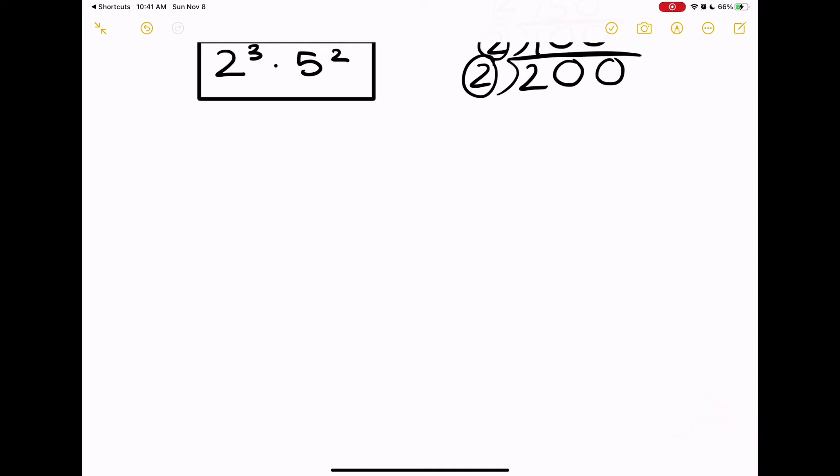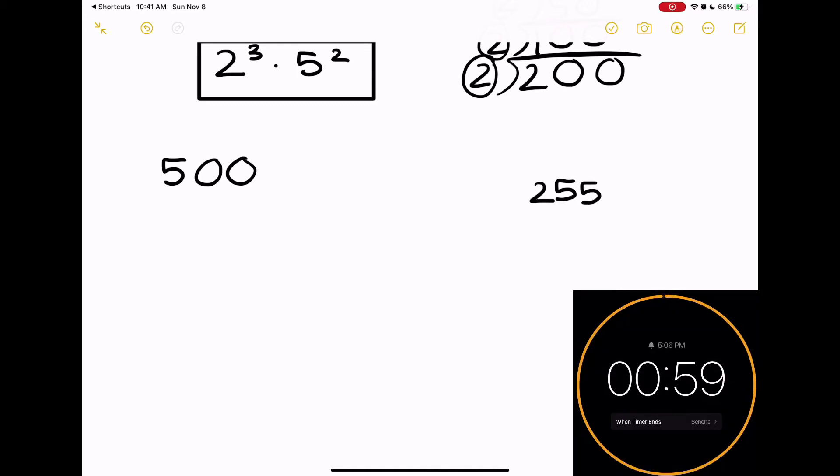If you're unsure if you got the right answer, always check your work by actually multiplying this out. If you get the original number then you know your prime factorization is correct. Now I want you all to do a practice problem all by yourselves. You will have one minute to do it, and I want you to factor out 500 using the tree method, but factor out 255 using the other method I showed you.